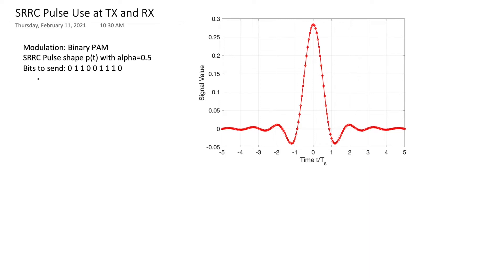I'm going to use a square root raised cosine pulse shape with alpha equals 0.5. This is defined, this function that I've graphed here in MATLAB is defined in the Rice Book in Appendix A.2.